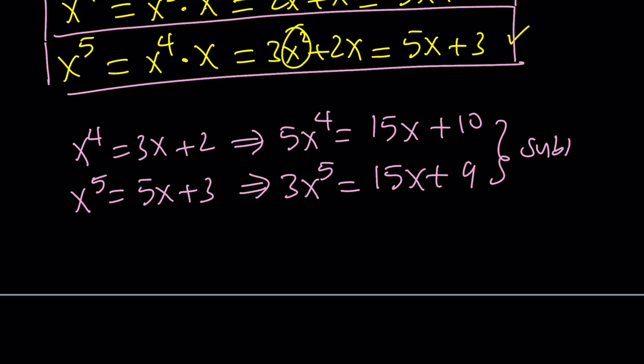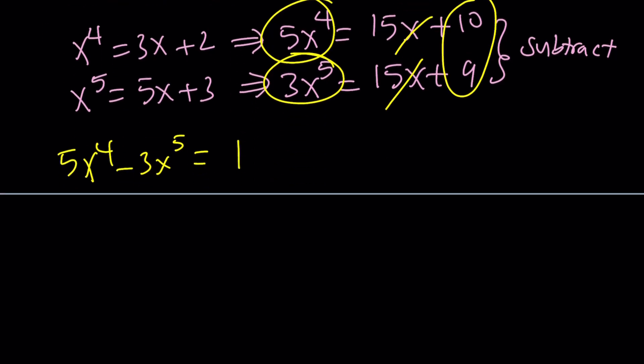Now, go ahead and subtract these two equations. This one minus this one. You're going to get, these two are going to cancel out. You're going to get 1. In other words, here's our conclusion.